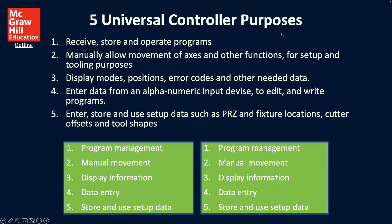The five universal controller purposes are: one, receive and store operating programs; two, allow manual movement of axes and other functions for setup and tooling purposes; three, display modes, positions, error codes, and other needed data; four, enter data from an alphanumeric input device to edit and write programs; and five, enter, store, and use setup data such as PRZ and fixture location, cutter offsets, and tool shapes.